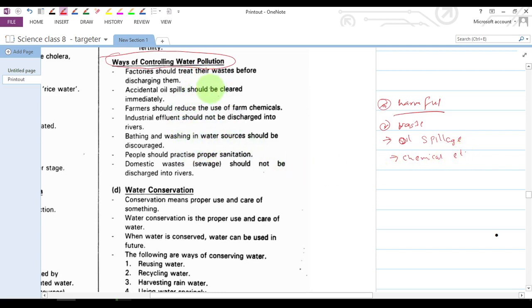Now we want to look at how we can control water pollution. The first way is factories should treat their waste before discharging them. The factories must make sure that they have treated the water or their wastes before discharge.